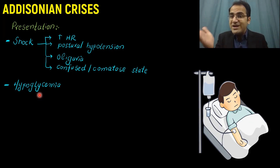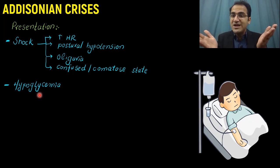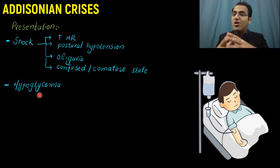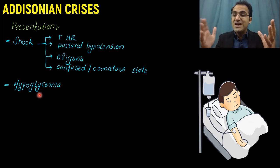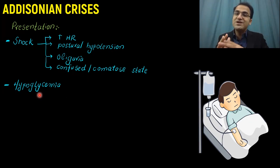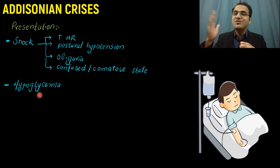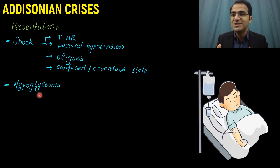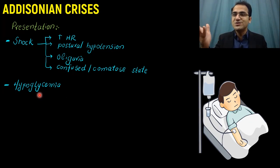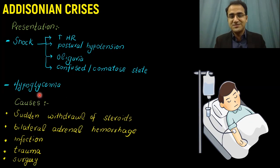When you check the fasting glucose level, this patient will have very low levels. Even some diabetic patients who develop Addisonian crisis suddenly get very good control of their diabetes even without insulin or medications — or they may even go into hypoglycemia without using medications. That is Addisonian crisis.